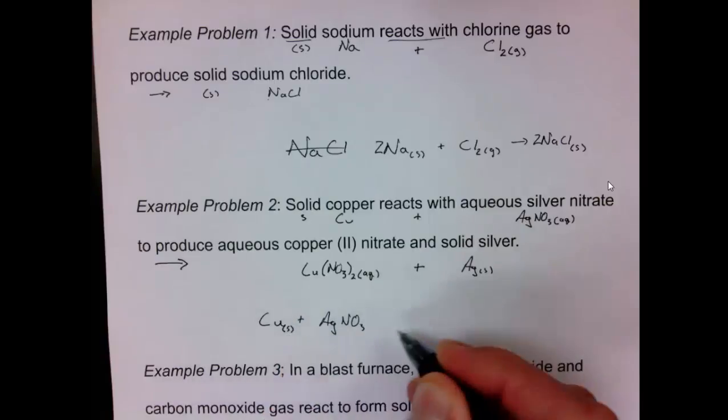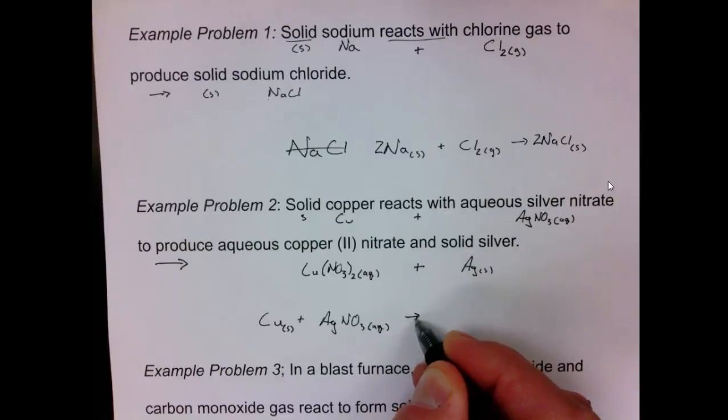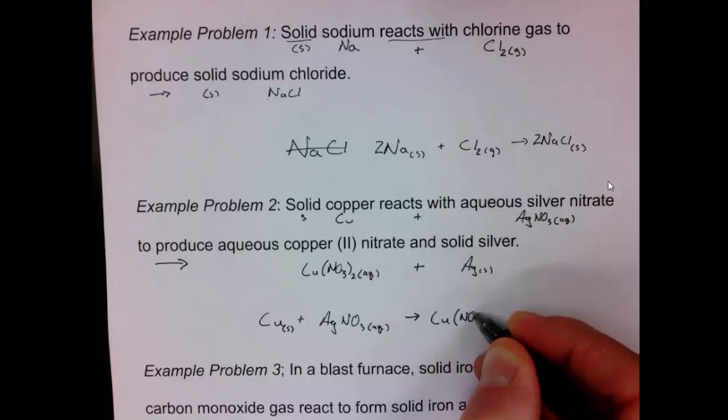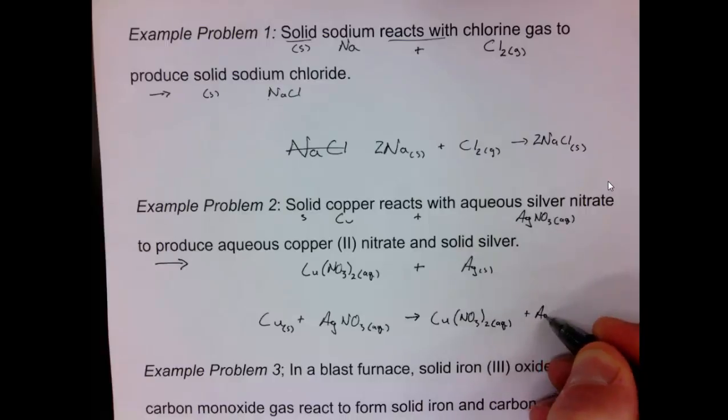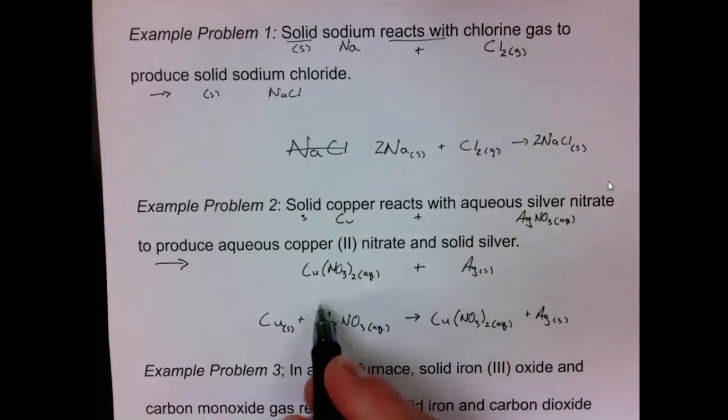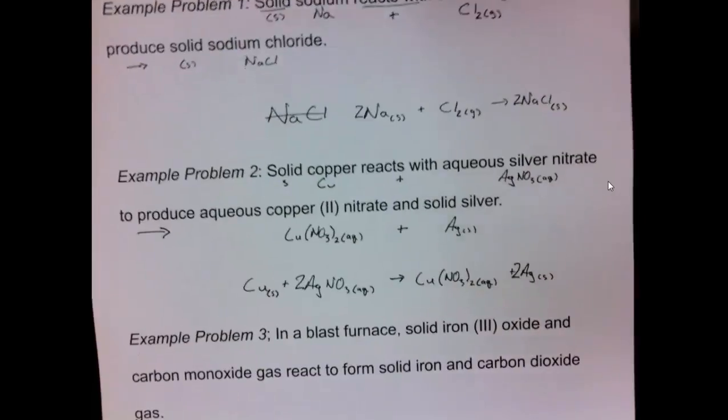I put this all together I get Cu plus AgNO3 go back and hit my phases that solid copper and aqueous silver nitrate to produce there's my arrow Cu(NO3)2 and that says that's aqueous and then plus silver solid. To make this balance because there's two nitrates I need to put a two in front of the silver I need to put a two in front of this silver and then we're a balanced chemical equation.